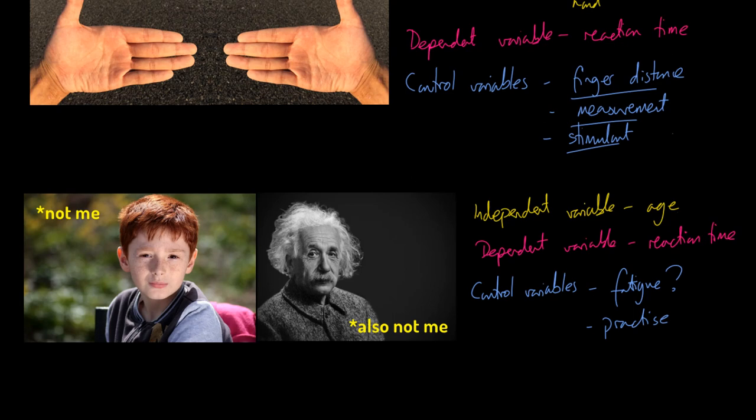Again, you have to control things like practice. And I guess hand dominance—you can't have the older person using their dominant hand and the younger person using their non-dominant hand because you would not be controlling that variable.